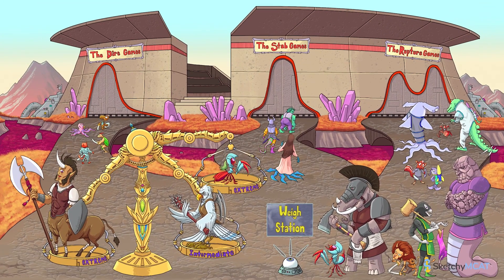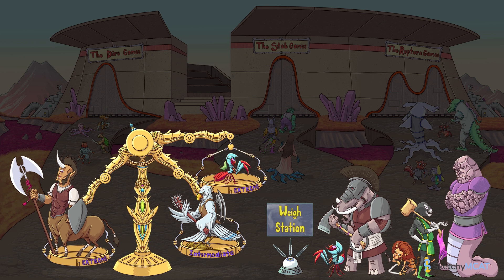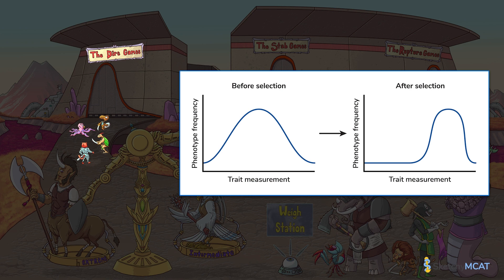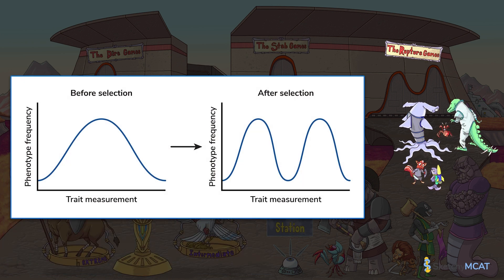That covers the three types of selection. Gladiators with a variety of phenotypes weigh in to determine if they have an extreme or intermediate phenotype. In directional selection, individuals with one extreme phenotype have the highest fitness, and these phenotypes become more common over subsequent generations. In stabilizing selection, intermediate phenotypes are selected for, and moderate traits become more common over generations. Finally, in disruptive selection, two extreme phenotypes are selected for, and intermediate phenotypes become less and less common over generations.